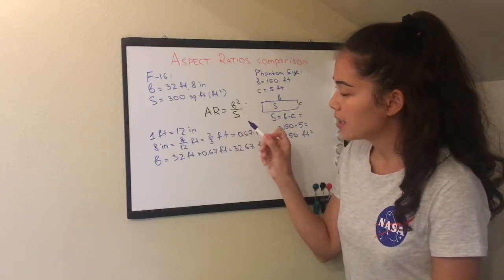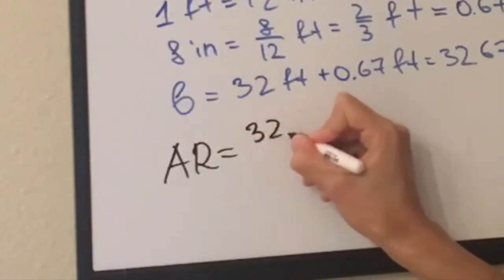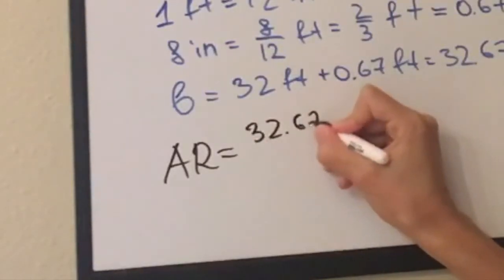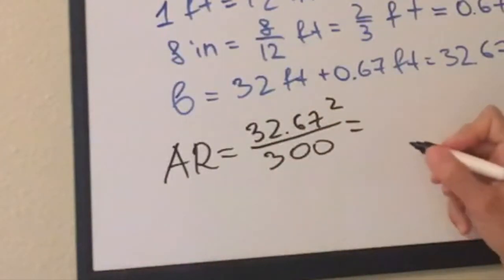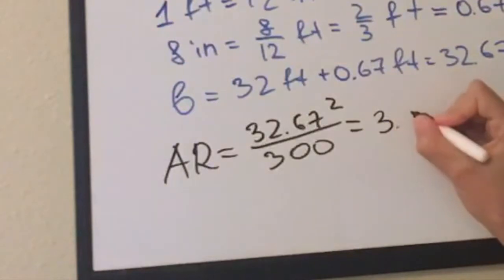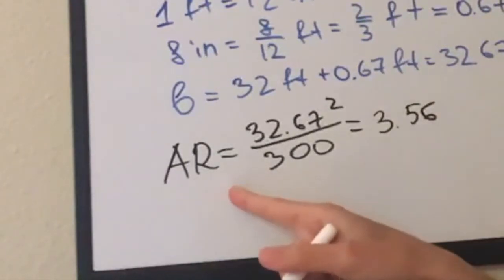So let's finally find the aspect ratio for F-16. This will be 32.67 squared divided by 300. And you can calculate that, which will give you 3.56. And what will be the units? There's no units because it's a ratio.